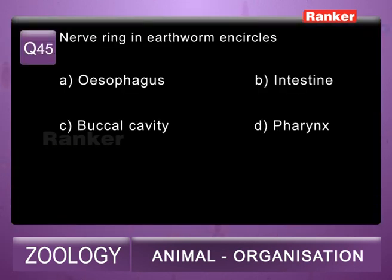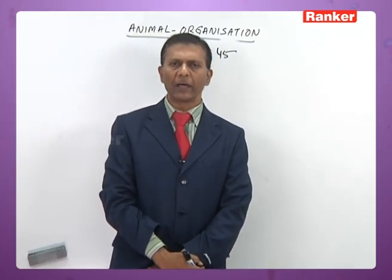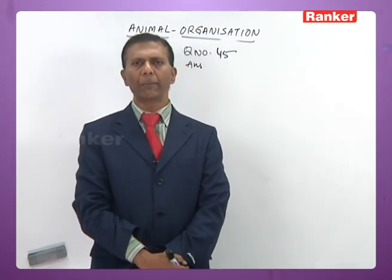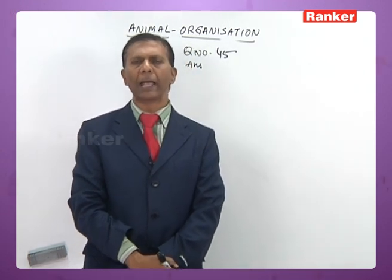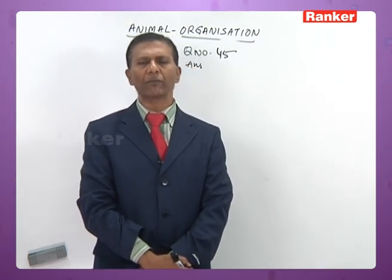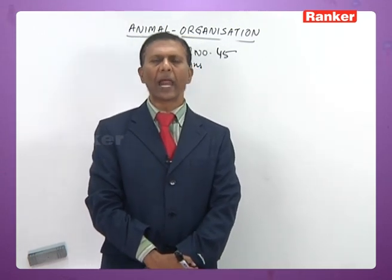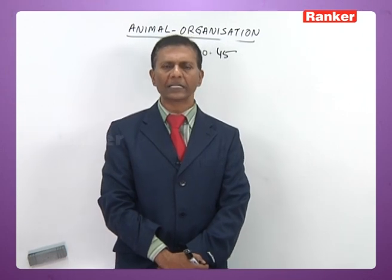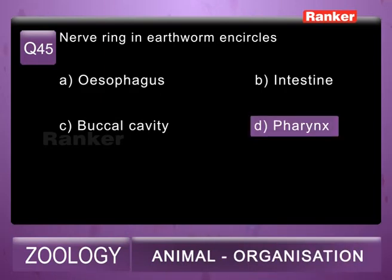Question 45: the nerve ring in earthworm encircles A) esophagus, B) intestine, C) buccal cavity, D) pharynx. In earthworm, the nerve ring is formed by a pair of suprapharyngeal ganglia and a pair of subpharyngeal ganglia. Suprapharyngeal ganglia, also called cerebral ganglia, lie above the pharynx in the third segment and are connected to the subpharyngeal ganglia in the fourth segment by circumpharyngeal connectives. So the 45th question correct answer is D, pharynx.